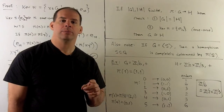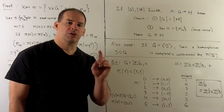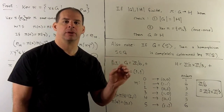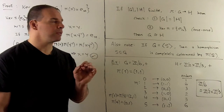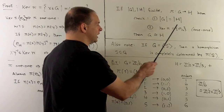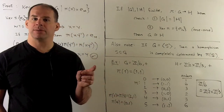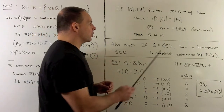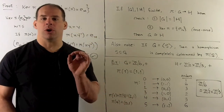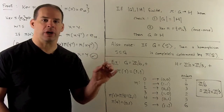One consequence of our result: suppose G and H are finite and we have a homomorphism pi from G to H. To show pi is an isomorphism, we first need the order of G to equal the order of H — the same number of elements. Then we need the kernel of pi to equal the identity of G, which gives us one-to-one. Because the groups have the same number of elements, onto then follows for free.